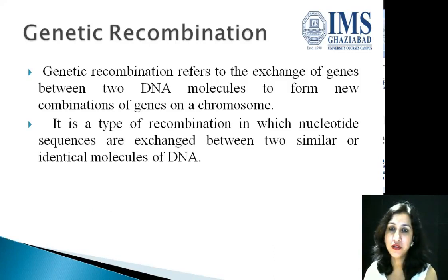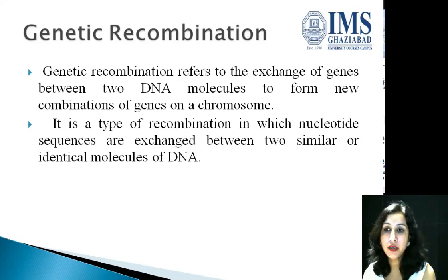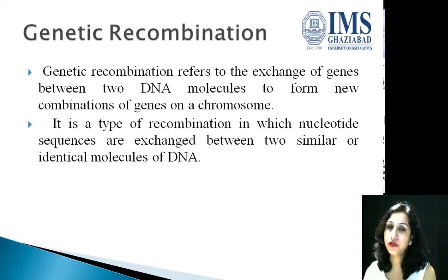Genetic recombination is the exchange of genes between two DNA molecules, and a new combination of genes — or a new recombination — is formed on a chromosome. It is a type of recombination in which nucleotide sequences are exchanged between two similar, identical molecules of DNA, where homology is shown between DNA molecules. Only at that position is recombination possible, and such a situation is known as genetic recombination.